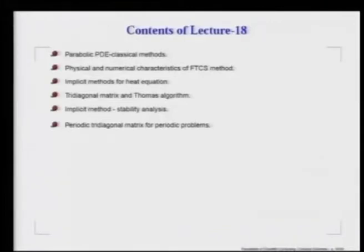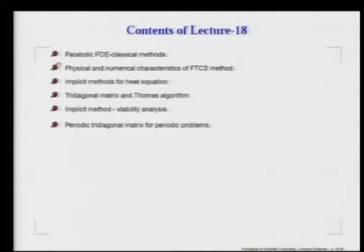In today's lecture 18, we continue our discussion on solving parabolic partial differential equations by classical methods. These are essentially explicit methods, and one property of this explicit method is that it brings in its own numerical characteristics as opposed to the physical characteristics. As demonstration, we are going to show the FTCS method and we will see that it brings in significant restriction on the time steps. One way to avoid this problem of time step restriction is to switch over to implicit methods, and this is demonstrated today by again considering the heat equation.